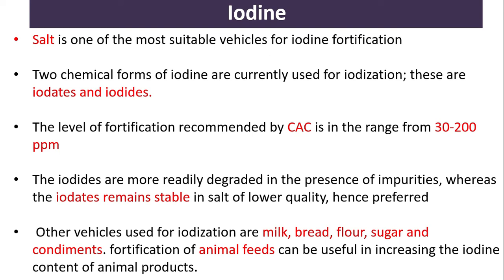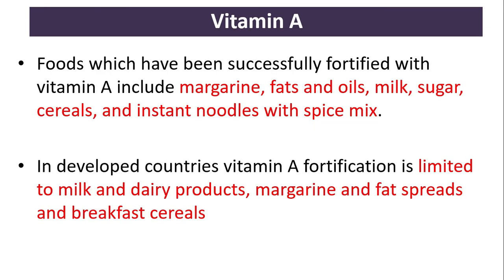Fortification of animal feeds can be useful in increasing the iodine content of animal products. Foods successfully fortified with vitamin A include margarine, fats and oils, milk, sugar, cereals, and instant noodles with spice mix. In developed countries, vitamin A fortification is limited to milk and dairy products, margarine, fat spreads, and breakfast cereals.